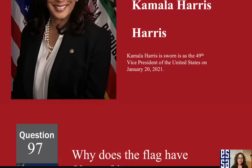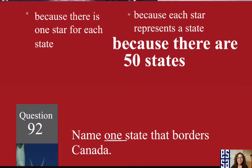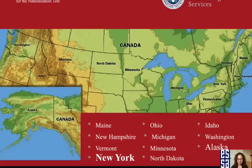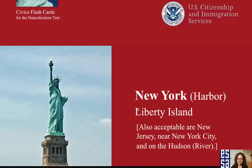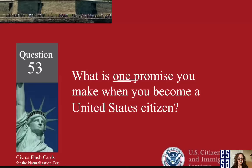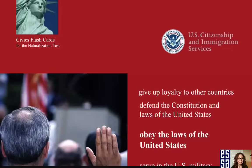Why does the flag have 50 stars? Because there are 50 states. Name one state that borders Canada. New York borders Canada. Where is the Statue of Liberty? Also in New York. What is one promise you make when you become a United States citizen? To obey the laws of the United States.